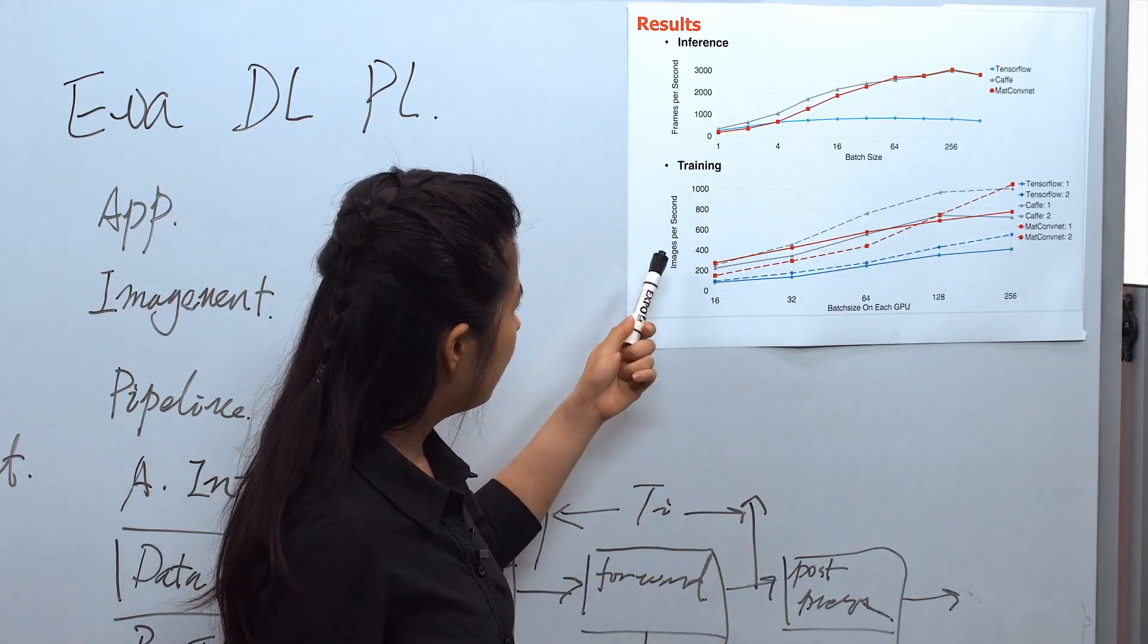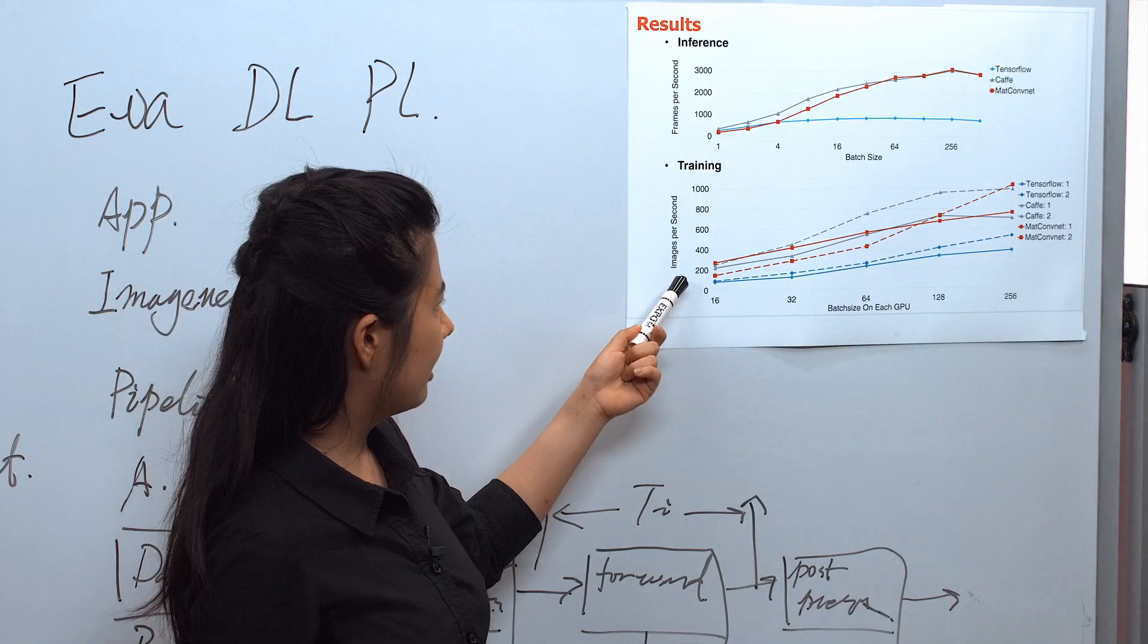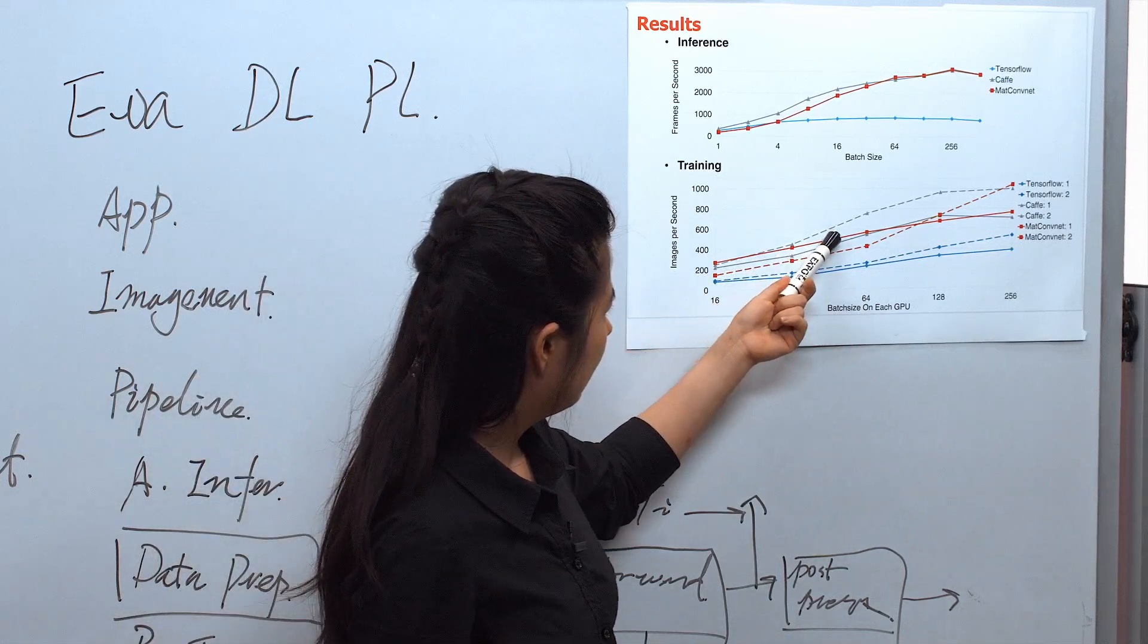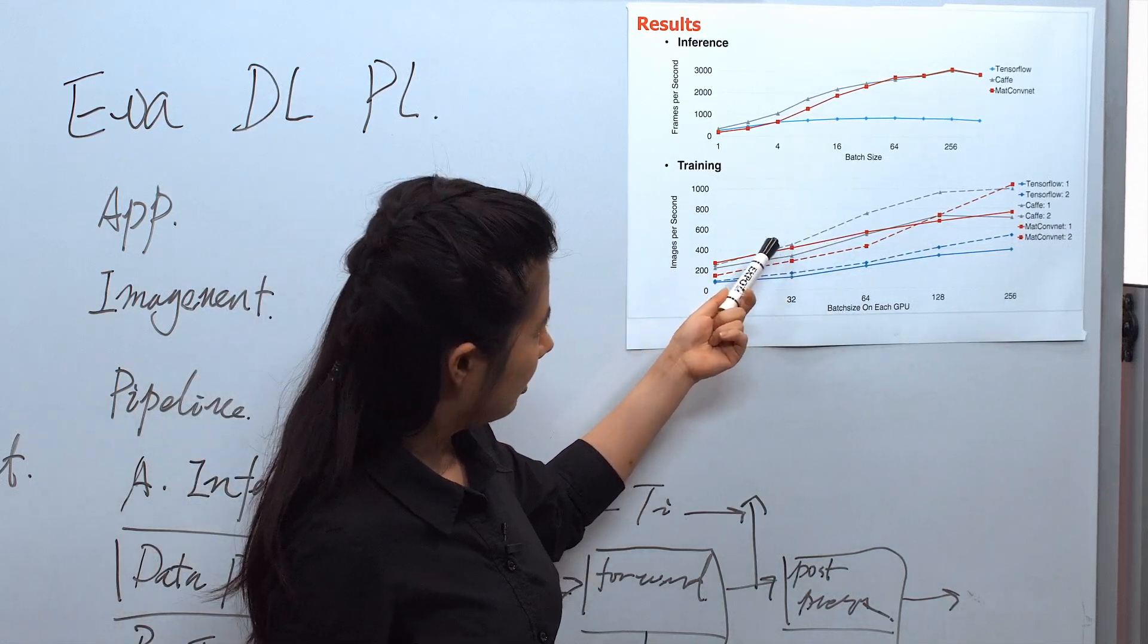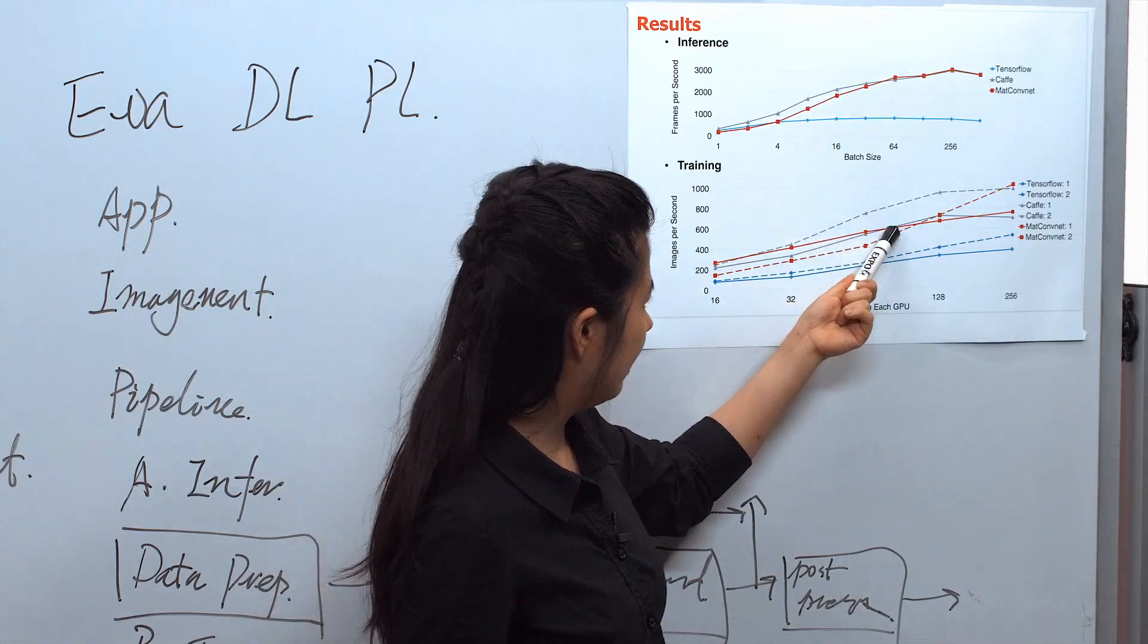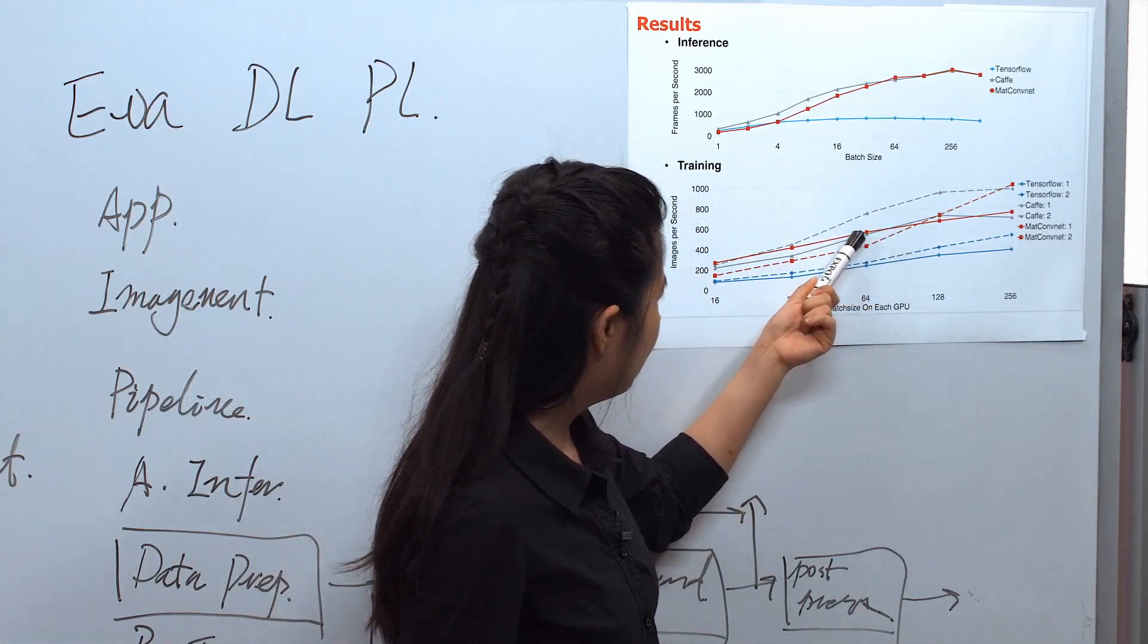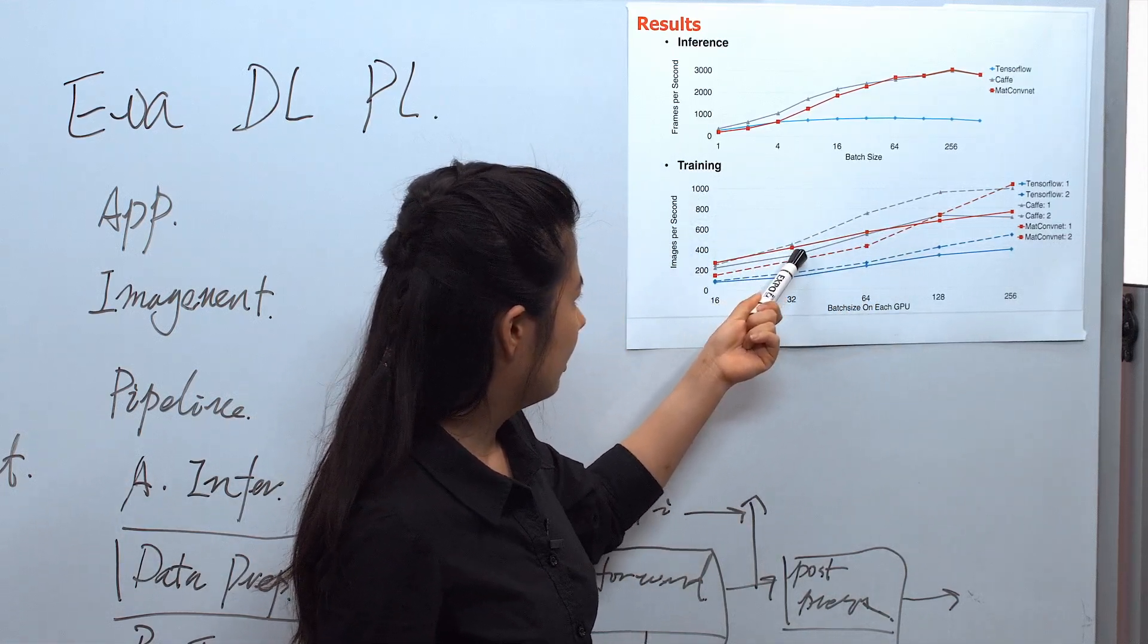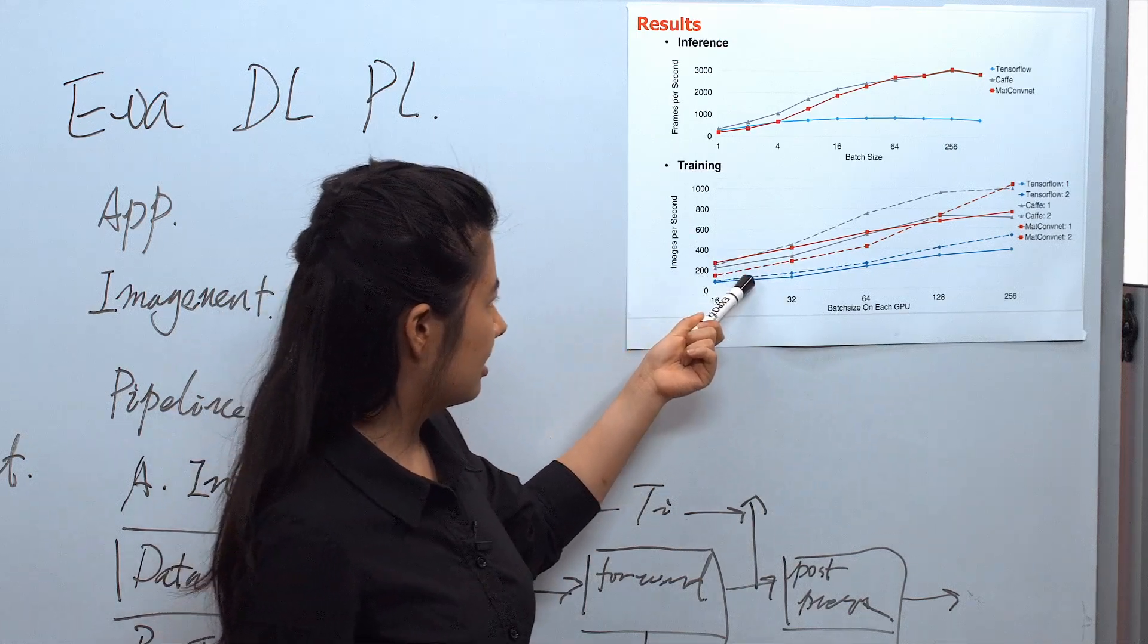As for the training result, we can say that Caffe performs the best, which is the fastest, then MXDCOMnet, and next is TensorFlow.